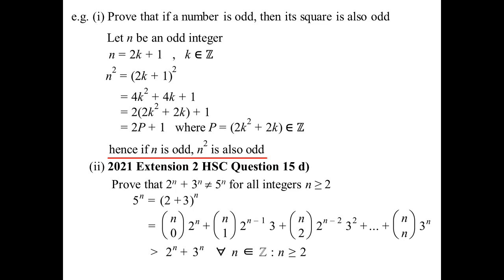This is only true for N greater than or equal to 2, because if N were equal to 1, we wouldn't have these middle terms anymore. If N equals 1, the expansion is simply (2 + 3)^1 which is 5, and 5^1 is 5 — so it's actually equal for N equals 1. So for N greater than or equal to 2, 5^N is strictly greater, and therefore cannot equal 2^N + 3^N. So that's another direct proof.